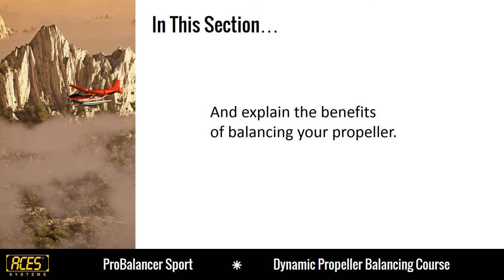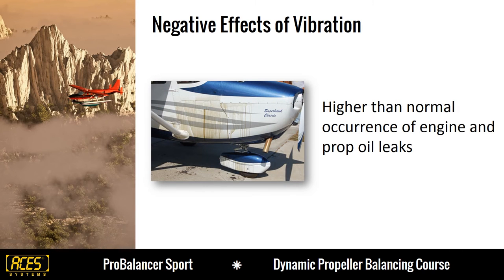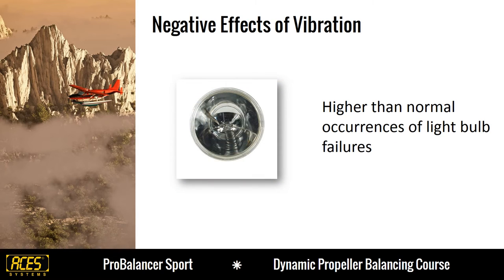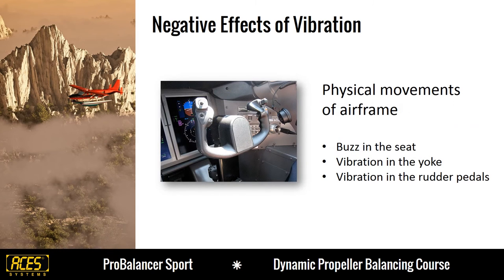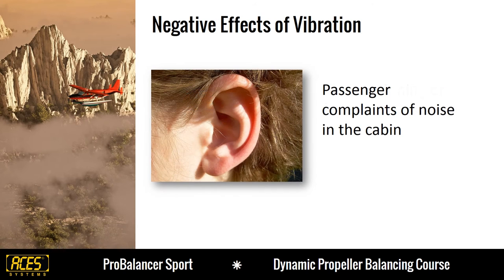First, let's discuss the negative effects of vibration. When your aircraft is experiencing higher-than-normal vibration, you may experience cracked exhaust stacks and sheet metal, higher-than-normal occurrences of engine and prop oil leaks, and higher-than-normal occurrences of light bulb failures. You will experience physical movements of the airframe, noticeable as a buzz in the seat, vibration in the yoke, and vibration in the rudder pedals. You can also experience malfunctioning or failed avionics, and your passengers may complain of uncomfortable noise levels in the cabin.